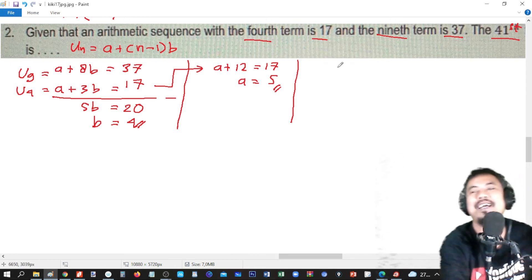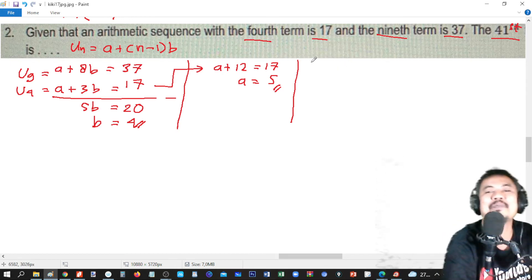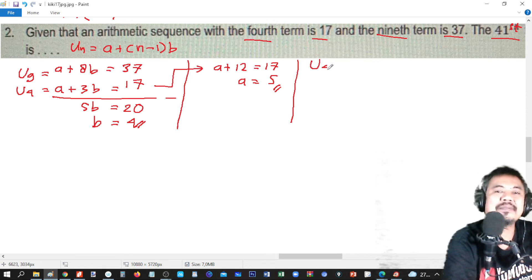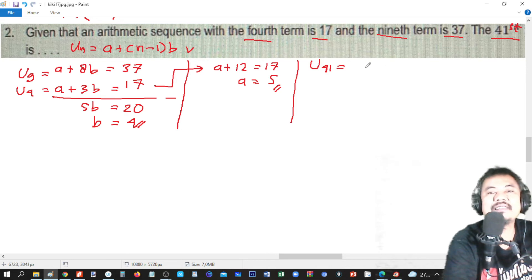Then, the final thing we do is we will find U41. Using this equation. A is 5, plus n minus 1. So, 41 minus 1 is 40. Multiply by b. Multiply by 4.